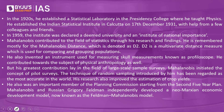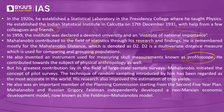Regarding his contributions: in the 1920s, he established a statistical laboratory in Presidency College where he taught physics. He established the Indian Statistical Institute in Calcutta on 17th December 1931, with help from colleagues and friends. In 1959, the institute was declared a deemed university and an institute of national importance. Mahalanobis is remembered mostly for the Mahalanobis Distance, denoted as D²,  a multivariate distance measure used for comparing and grouping populations. He also invented the profiloscope, an instrument used for measuring skull measurements, and contributed to the subject of physical anthropology.